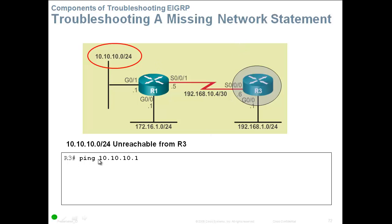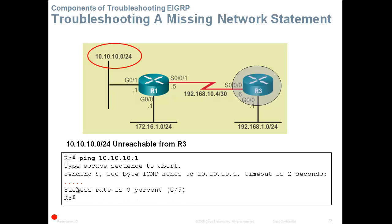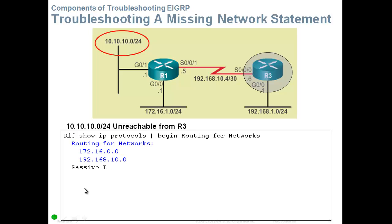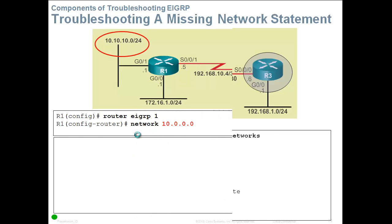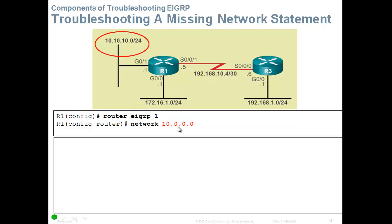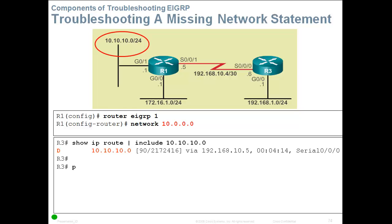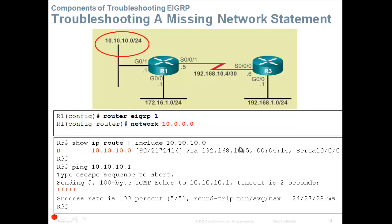Troubleshooting a missing network statement: from Router 3, we ping 10.10.10.1 and get no replies — five dots. When we do Show IP Protocols on Router 1, we can see that we are routing for 172.16.0.0 and 192.168.10.0, but we are not routing for network 10.10.10.0. That is why Router 3 cannot reach network 10. We go to Router 1 and enter router EIGRP 1, then add network 10.0.0.0. After adding that to the EIGRP configuration, Show IP Route on Router 3 now shows network 10.10.10.0, and pinging that IP address gives five exclamation marks — success rate 100%.